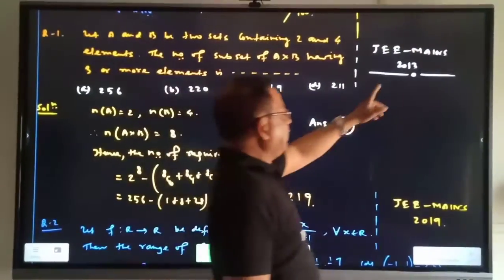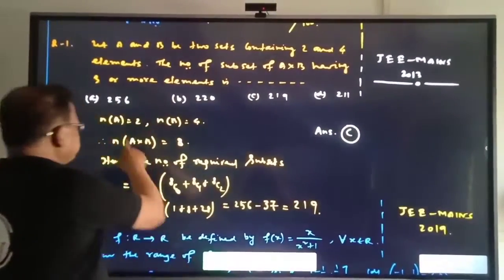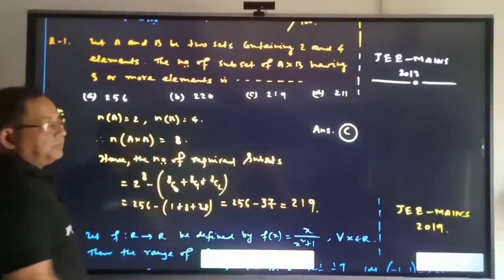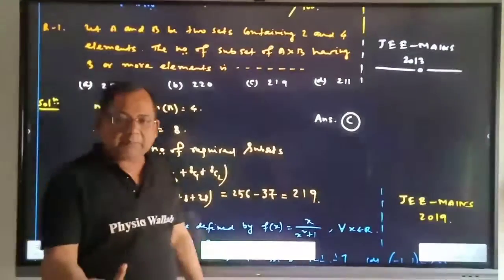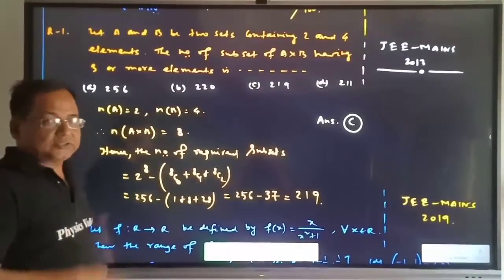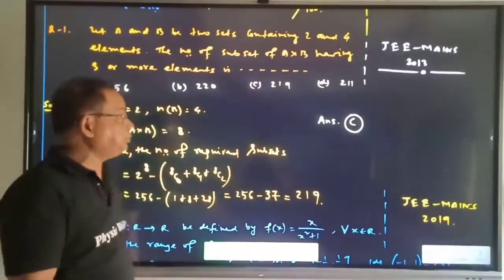Given number of A equals 2, number of B equals 4, so number of A union B is obviously 6. Wait, it should be 8. So total number of subsets will be 2 to the power 8.